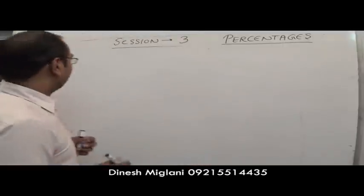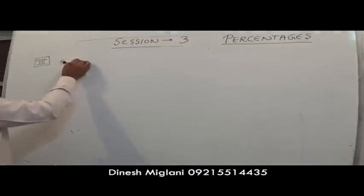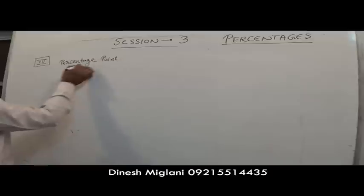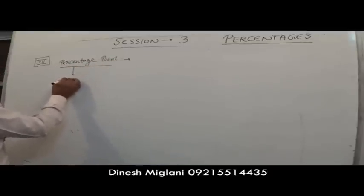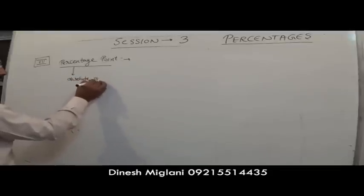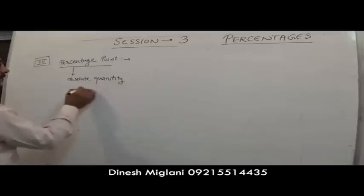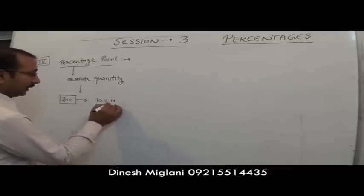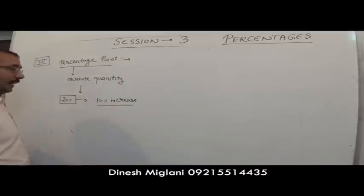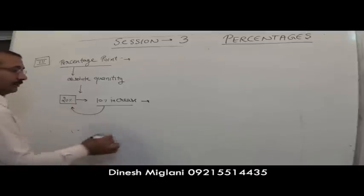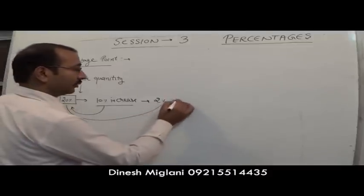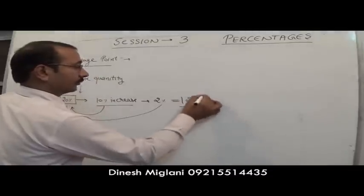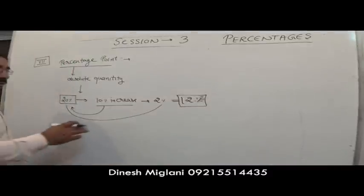Now we discuss the term 'percentage point.' Percentage point is an absolute quantity. Suppose one quantity is 20%. We want to make a 10% increase in it. We find 10% of 20% = 2%, so the overall value becomes 22%.